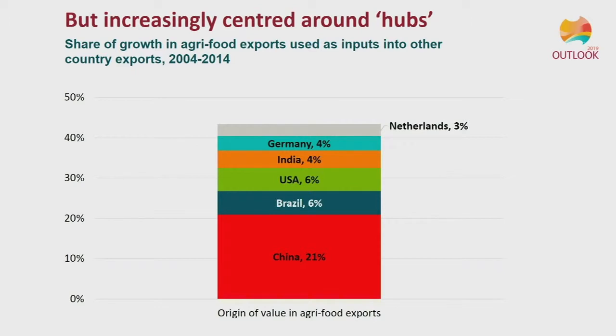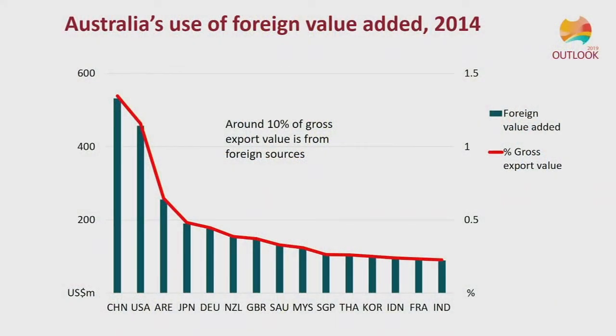Similar things are seen on the buying side of the market, where China really begins to dominate. So despite having multiple suppliers and multiple buyers, we're getting a concentration at different points. When we look at how Australia fits into this, the global importance of China is replicated for Australia. Looking backwards — who's supplying inputs into our own exports — around 10% of our total gross value of trade is represented by foreign value added. So for every $10, $1 we take from international markets. Our exports are underpinned by our imports.